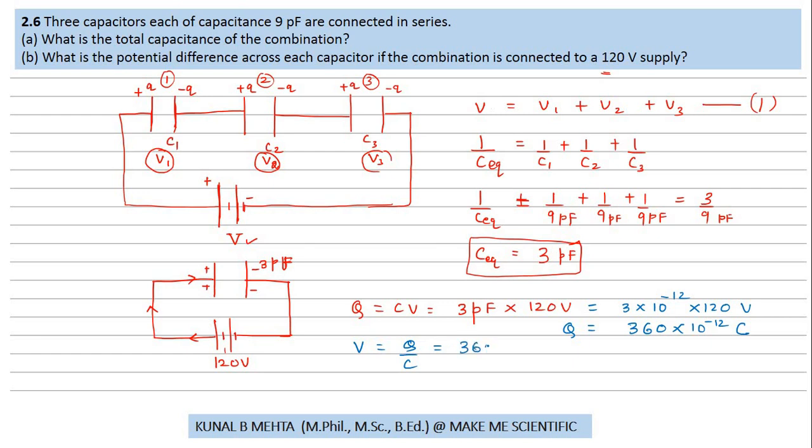So Q is equal to 360 into 10 raise to minus 12 coulomb divided by the capacitance turns out to be 9 into 10 raise to minus 12 farad. And since again everything is in SI unit, I should get my final answer in volts. So this is 10 raise to minus 12 getting cancelled and my answer is 40 volts.